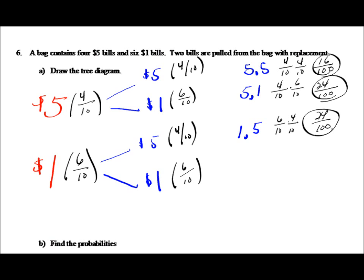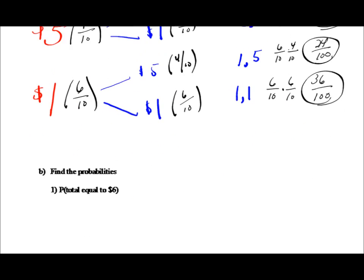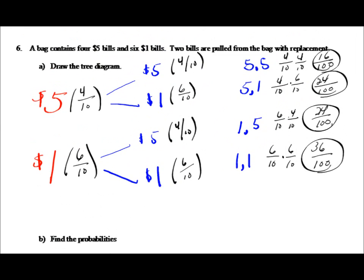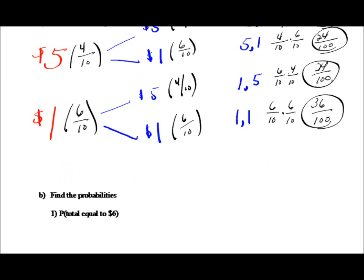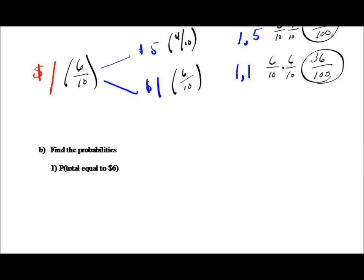Finally, we could get two one dollar bills — a one and then a one. Six tenths times six tenths gives thirty-six out of one hundred, a thirty-six percent chance of getting a one dollar bill followed by a one dollar bill. Now, the probability that the total amount of money is six dollars: that happens here and here — twenty-four out of one hundred plus twenty-four out of one hundred — giving forty-eight out of one hundred.